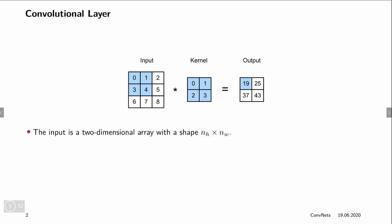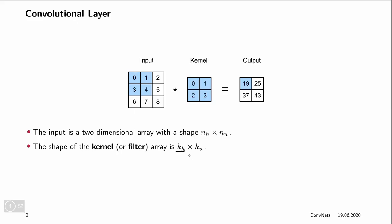And we do so over the whole input to create all the values of the output. In this example, we have a two-dimensional input array of size 3 by 3, where the number of rows is n_h, where h stands for height, and the number of columns equals n_w, where w stands for width. And the kernel has a size of kernel height k_h times kernel width k_w. Sometimes we also call the kernel filters.